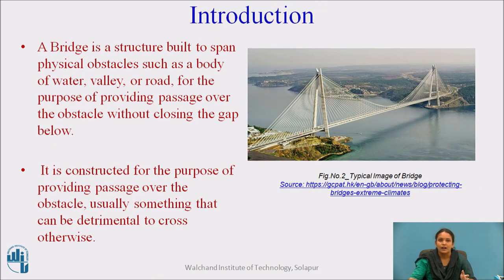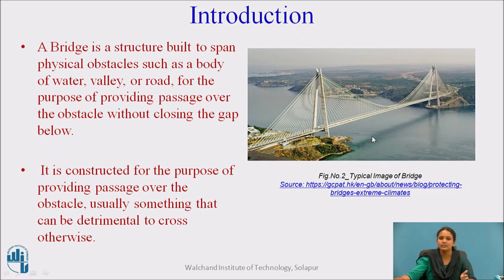Introduction. A bridge is a structure built to span physical obstacles such as a body of water, valley or road, for the purpose of providing passage over the obstacles without closing the gap below. Normally, we construct bridges over rivers or at hilly areas to provide an efficient transportation system without disturbing the natural obstacles. In this figure, you can see a river valley over which a bridge is constructed.